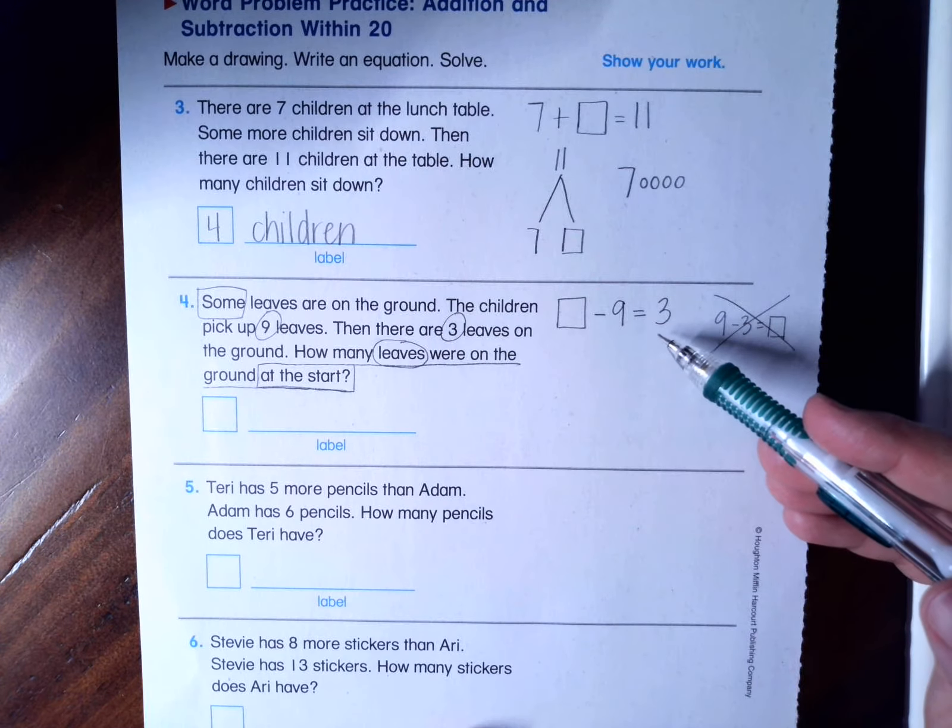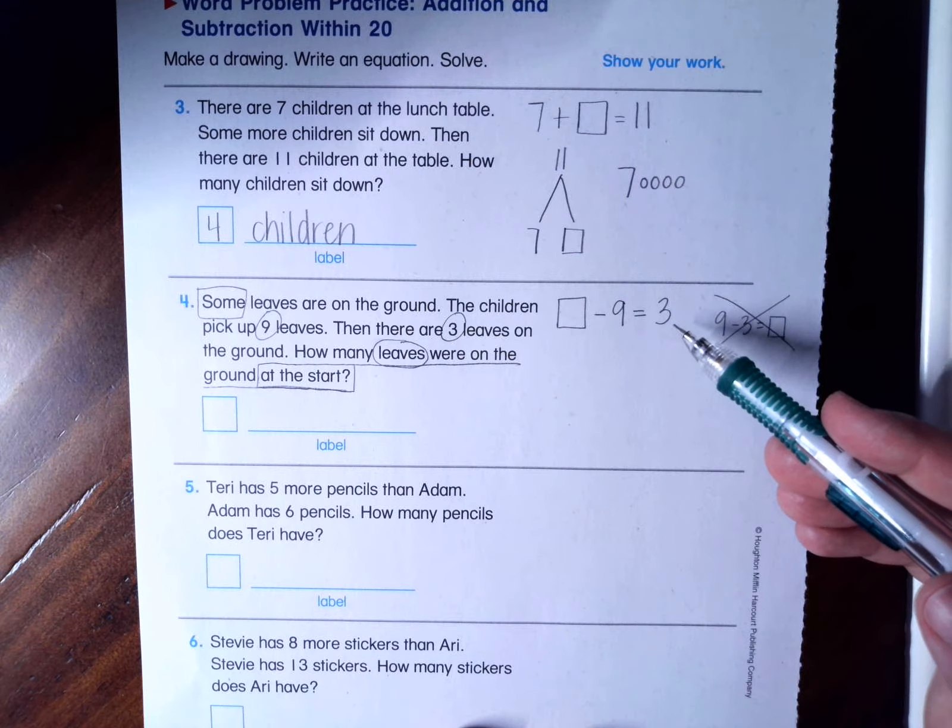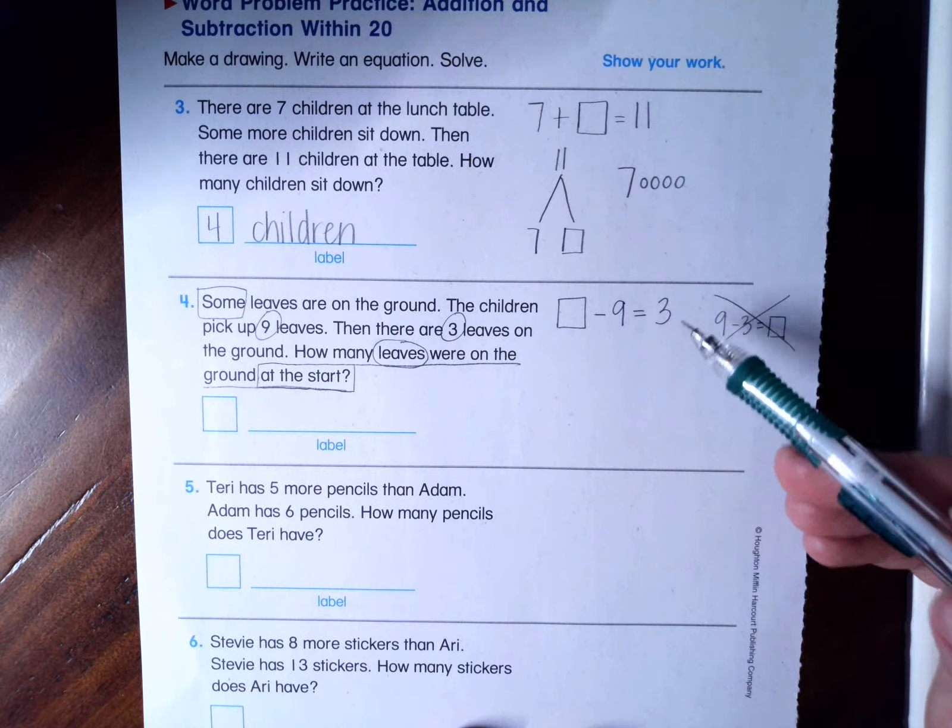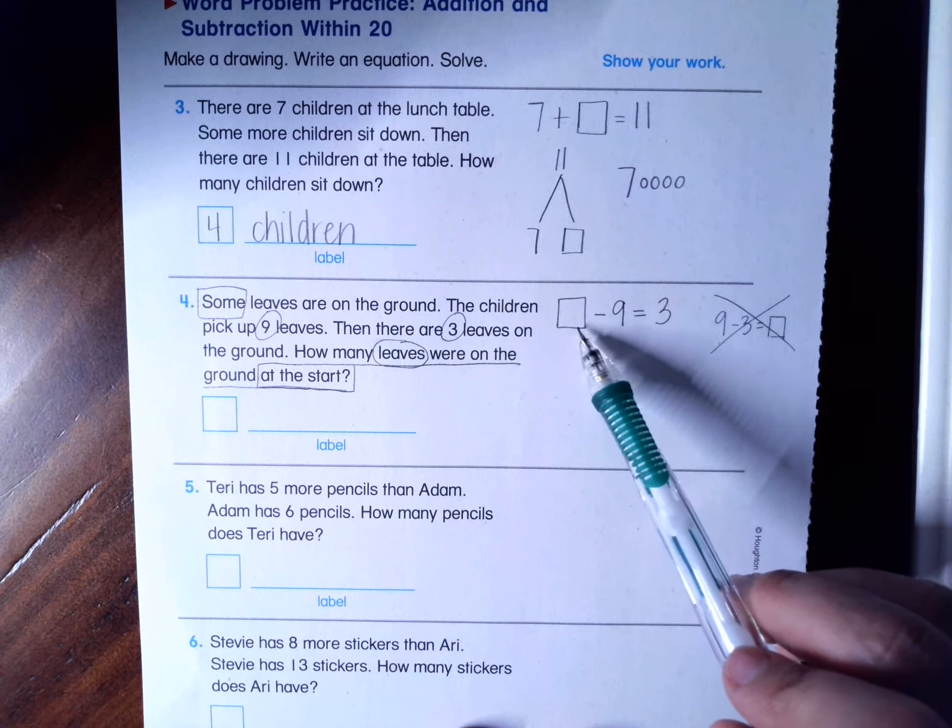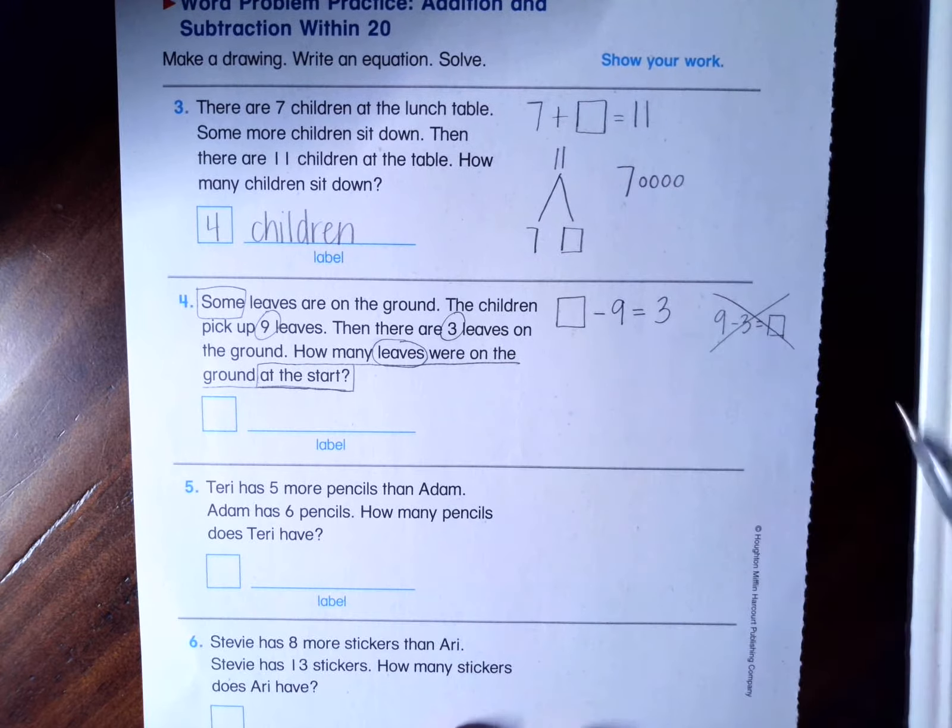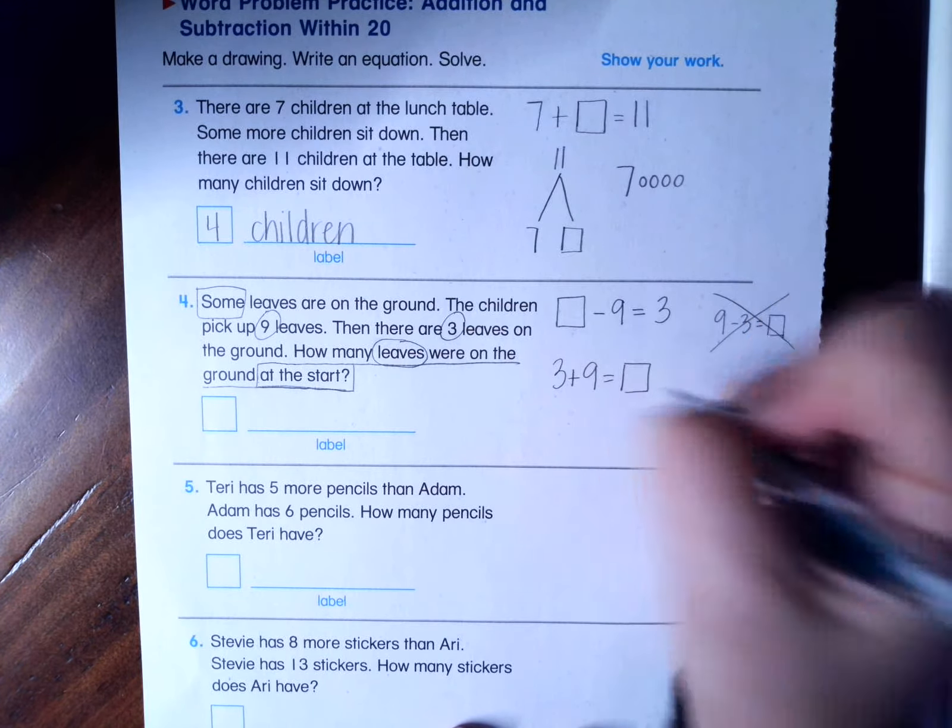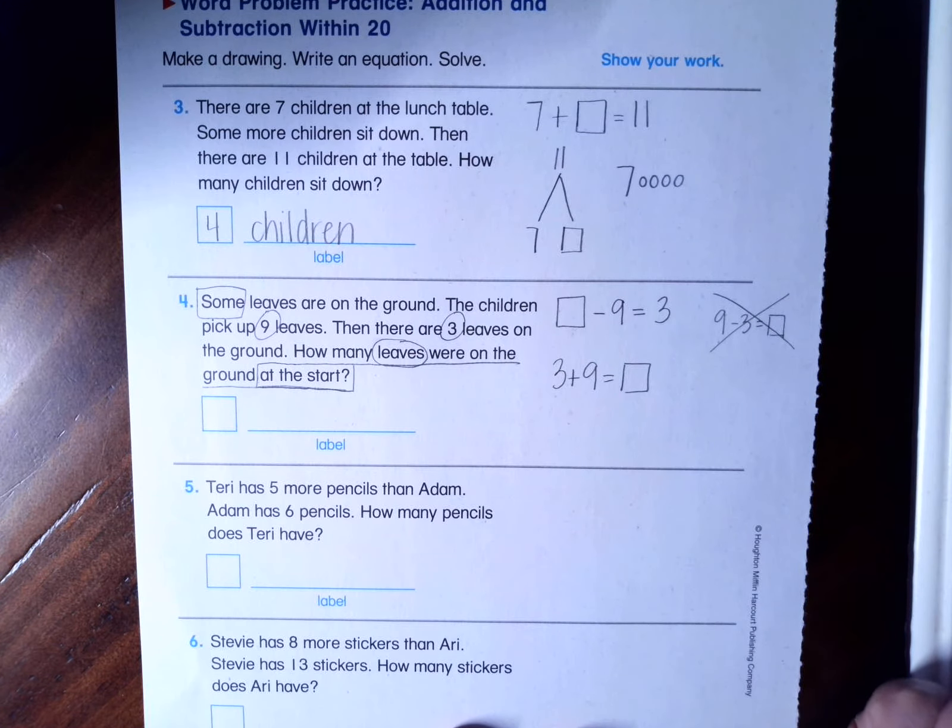We never, ever, ever, ever, ever solve a problem that looks like this. We always want to take this and turn it into an addition problem because we are missing that total. Do you guys remember this? So I'm going to write three plus nine equals box. Now I can solve.